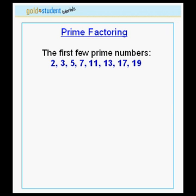These are 2, 3, 5, 7, 11, 13, 17, and 19. These numbers are only divisible by themselves or by 1, therefore they are prime numbers.